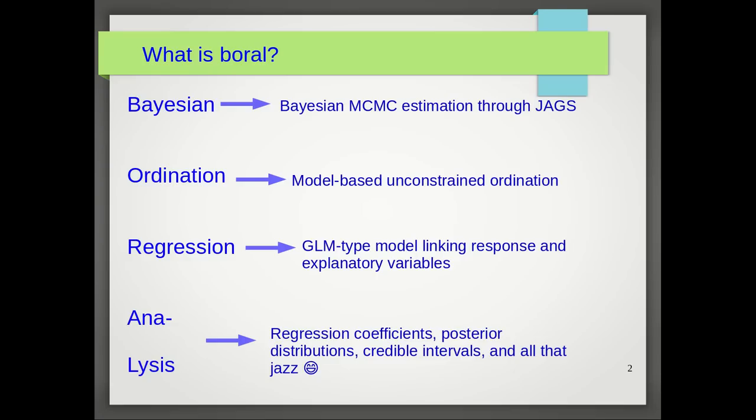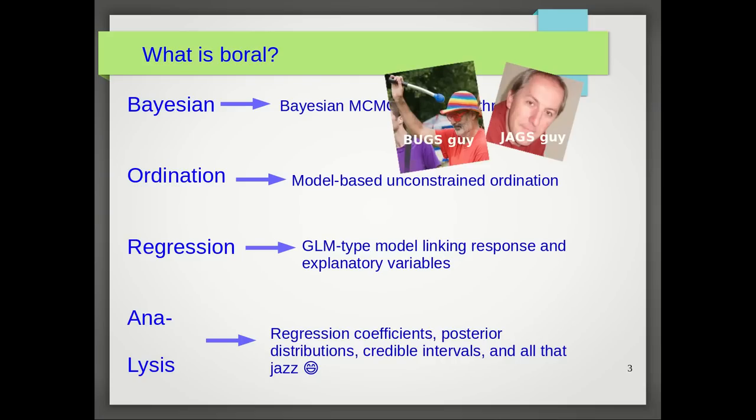BORAL stands for Bayesian ordination regression analysis. Bayesian means we're going to be doing Bayesian Markov chain Monte Carlo or MCMC estimation, and particularly the estimation is done through JAGS. JAGS is a very well-known program designed to do MCMC estimation of Bayesian hierarchical models. It's got a very similar syntax to BUGS or WinBUGS or OpenBUGS, but the estimation in BORAL is done through JAGS.